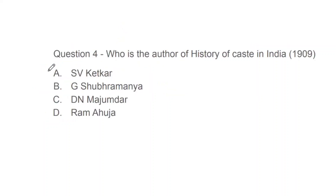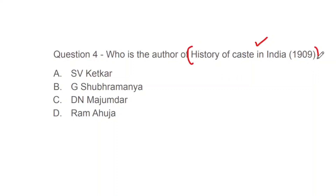Question 4: Who is the author of 'History of Caste in India'? When we study Indian Society, caste is a very important topic. You should know the names and authors of classic books on caste. For NET, books and authors are especially important. Options: S.V. Ketkar, G. Subramanya, D.N. Majumdar, or Ram Ahuja. The correct answer is A, that is S.V. Ketkar.